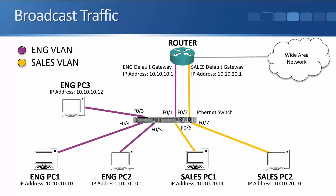The big difference and benefit of VLANs comes with broadcast traffic. Now when sales PC2 sends out some broadcast traffic, it hits the switch and the switch floods it out all ports — but only ports that are in the same VLAN. So it hits all of the other sales PCs and the sales interface on the router, but it does not hit any of the engineering PCs. The traffic only gets flooded where it needs to go, which improves both security and performance.